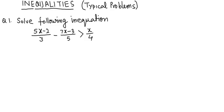Problem number 1: solve the following inequality: (5x - 2)/3 - (7x - 3)/5 is greater than (x - 4). So, see how we will solve it.